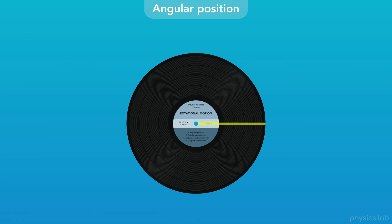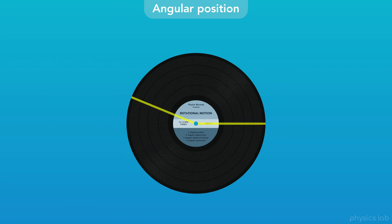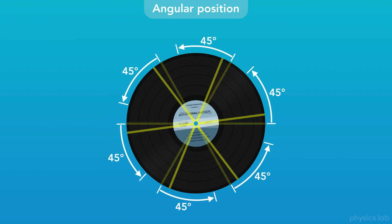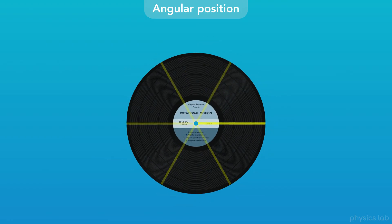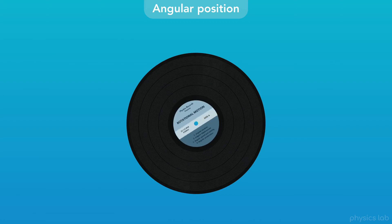When we added this line on the record, it didn't actually matter where we put it. If we add another line, we see that both lines rotate 45 degrees. In fact, any line on this record will rotate the same amount, because the entire object is rotating together. It's easier to show what's happening with just one line, but keep in mind that when we talk about the angular position of this line, we're actually representing the angular position of the entire record.